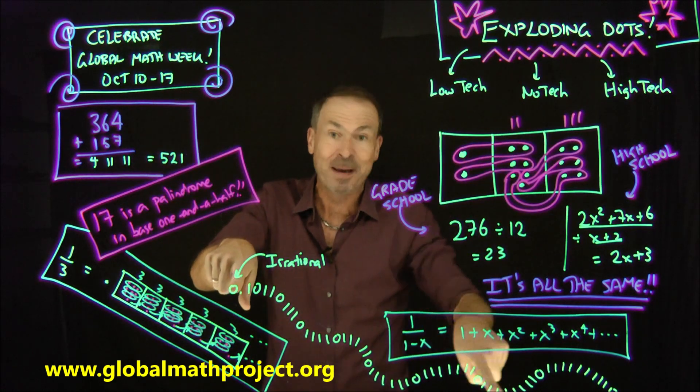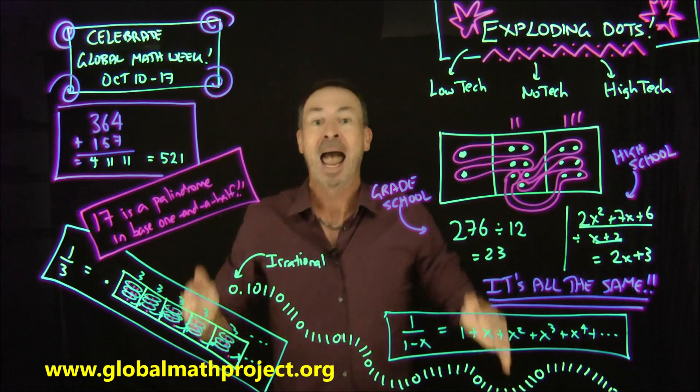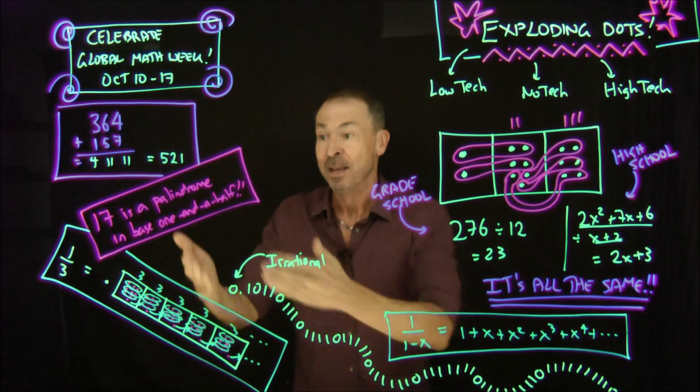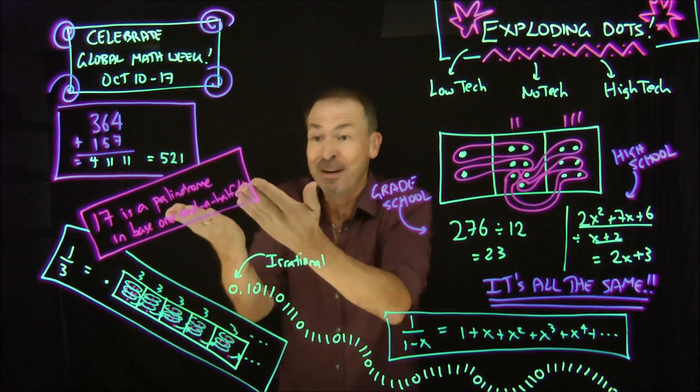More than that, you can actually see that some numbers are actually going to be irrational. You can actually own your own irrational number. And we can even go to unsolved research mathematics. For example, 17. It's a palindrome in base one and a half. What? That's crazy. What does that even mean?